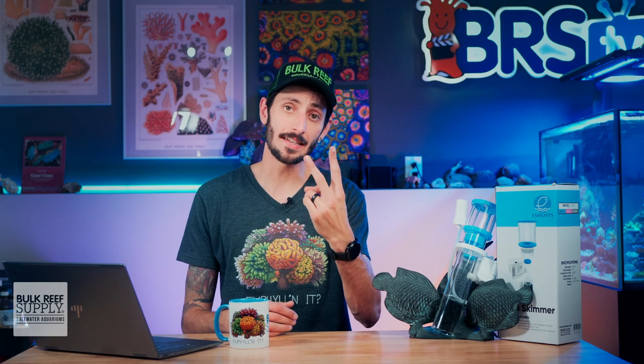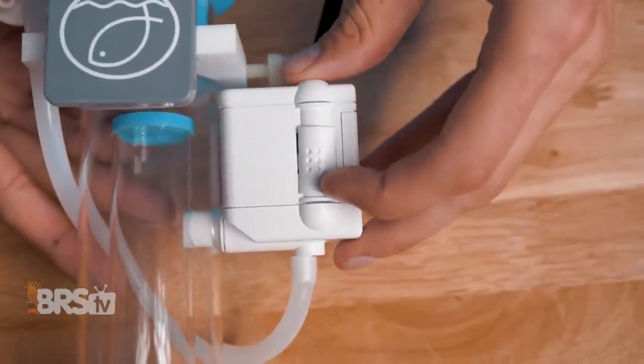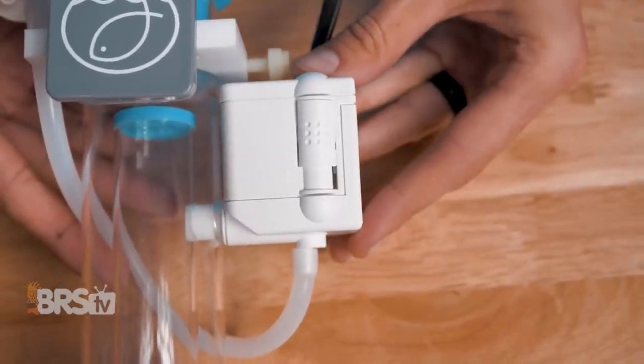You do also have a second point of adjustment on the CJ pump. It has a small gate on the side to increase and decrease the water flow if you find that you've got too much air and flow for the amount of organics in the tank.